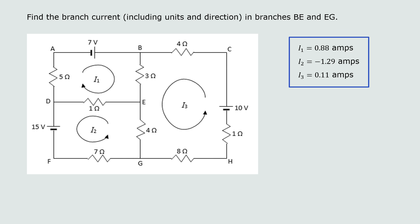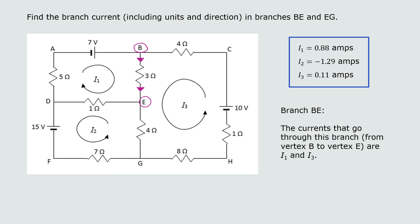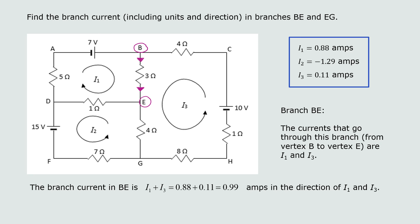Next we find the branch current including units and direction in branch BE. The currents that go through branch BE from B to E are I1 and I3. The branch current in BE is I1 + I3 = 0.88 + 0.11 = 0.99 amps. Both currents are going the same direction — from B to E — so the result is 0.99 amps in the direction from B to E.